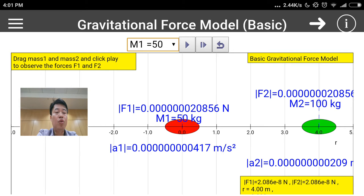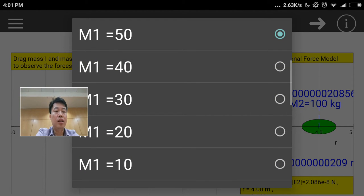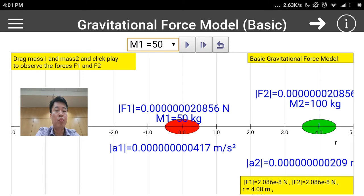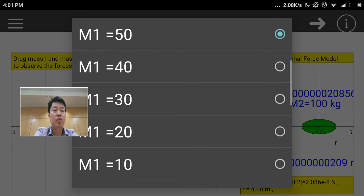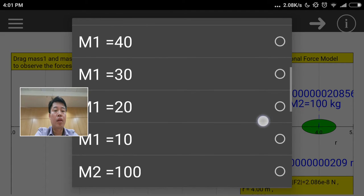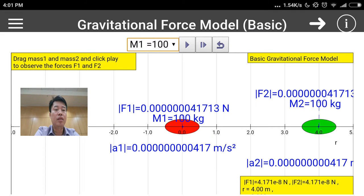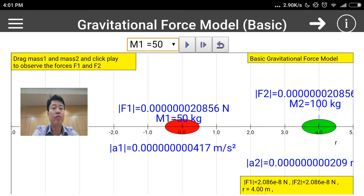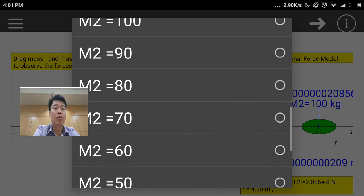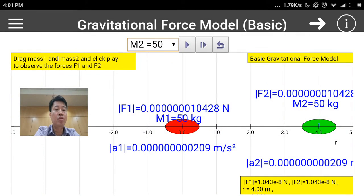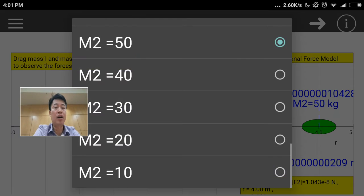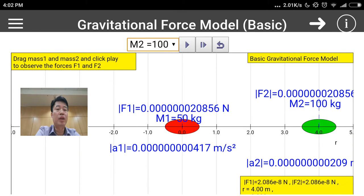Now it's 2.086. Let's increase it. You can see that this is double again, so it seems to be proportionately varying. Now how do you change m2? You can correspondingly change m2 as well. If you change m2 to 50, then the forces will also correspondingly be half. If you double it, it goes back to double.